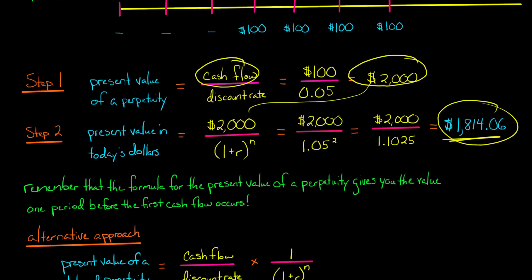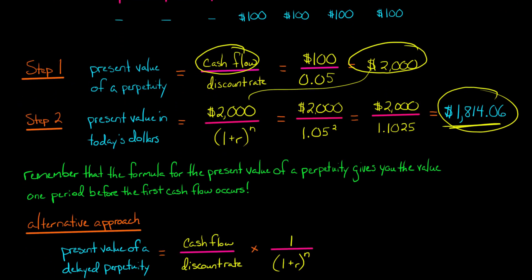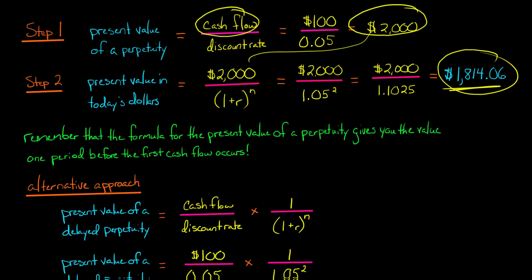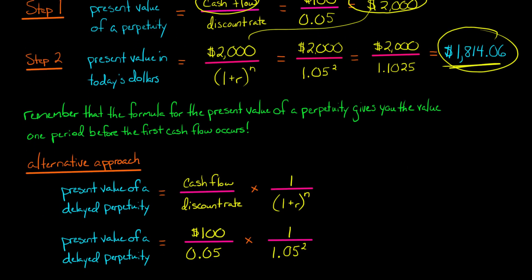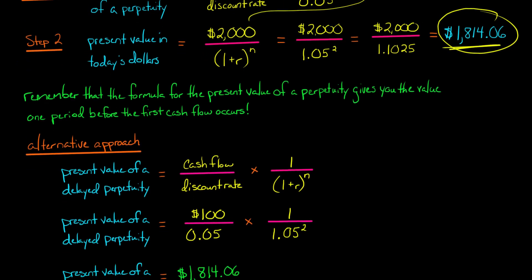Now, there's another formula. Instead of doing this two-step approach, you could collapse it into a single formula. And if you like formulas, this might be a little easier for you to think about. You could just say the present value of a delayed perpetuity equals the cash flow divided by the discount rate, which you remember, this is the formula for a regular perpetuity, and just multiply that by one divided by one plus R to the nth power. It'll get you the same place as this two-step process. It's just a faster way to do it if you know the formula.